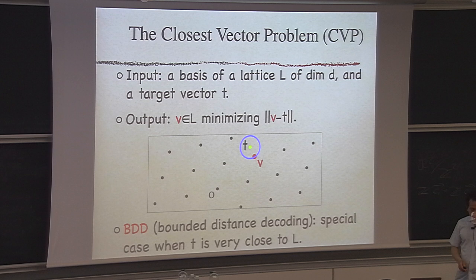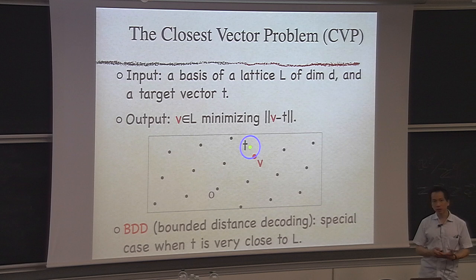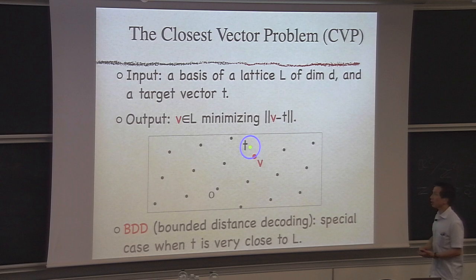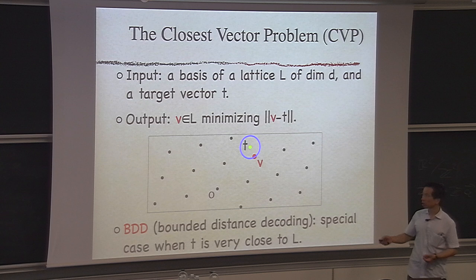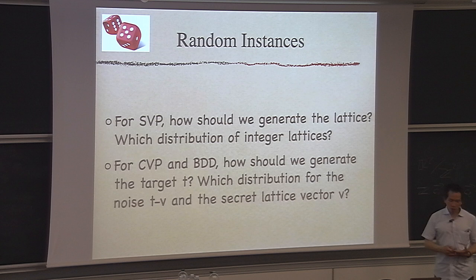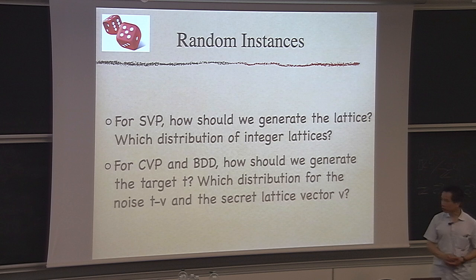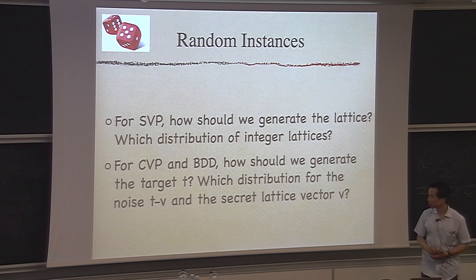When thinking about these problems from a practical point of view, the first question is how to generate instances. How do you choose a lattice? For CVP, how do you choose the target vector? For BDD, how do you choose the noise? Selecting random prime numbers is straightforward, but there are so many ways to choose an integer lattice. Which distribution should we target? This motivates the question of how to choose a random lattice.